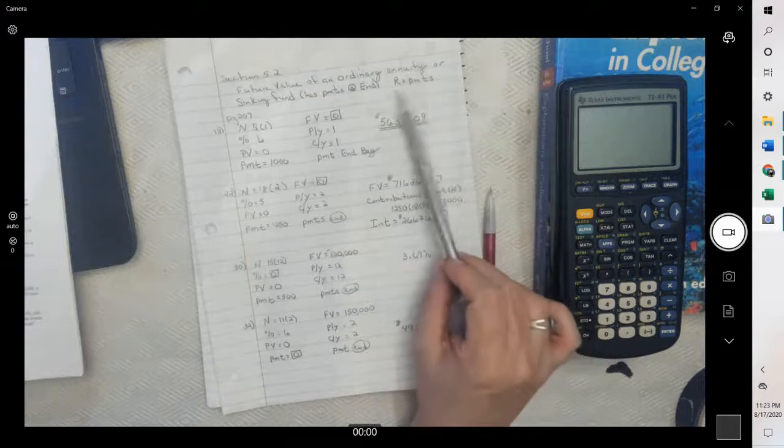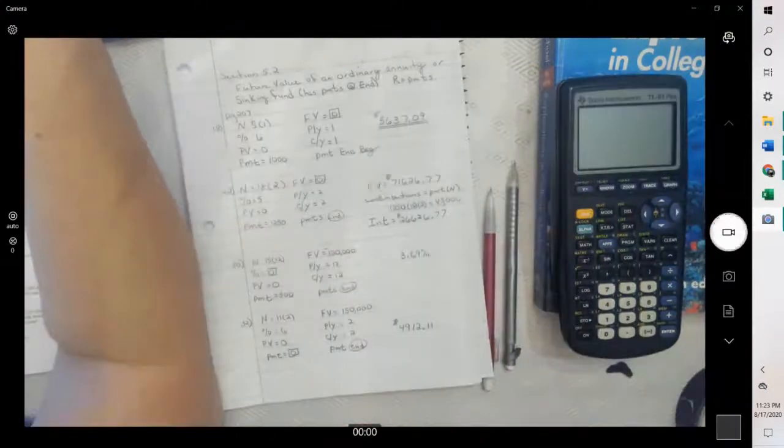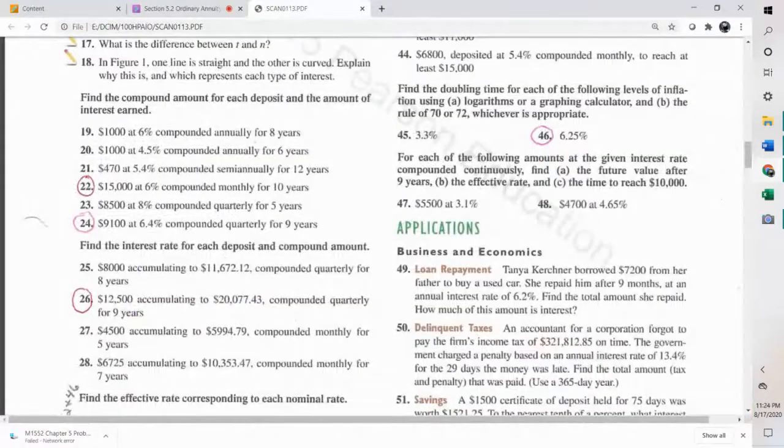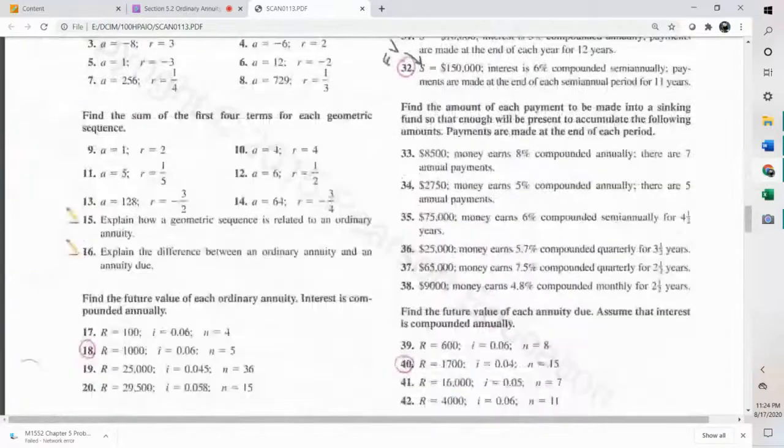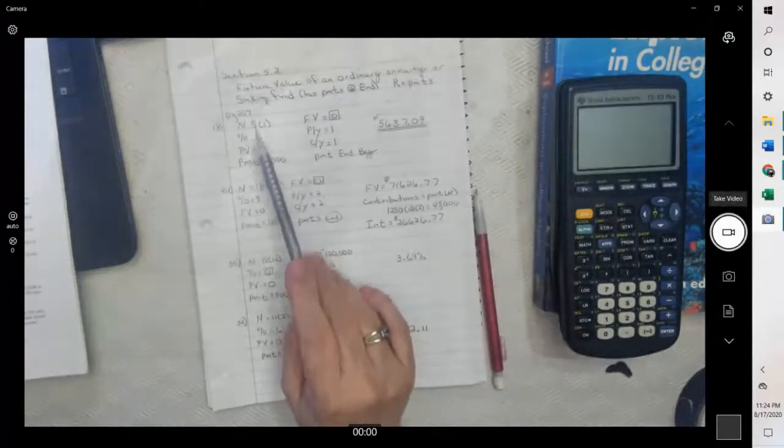And some of these problems, the way they're set up, they'll have R equals to payment. So if we look at number 18, notice they're also giving us the interest rate as a decimal, and N is the number of years. So find the future value of each ordinary annuity. Interest is compounded annually. So we are putting payments of $1,000 in at 6% for five years, and we're doing that yearly.